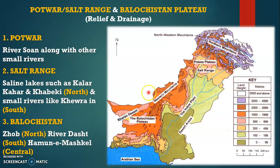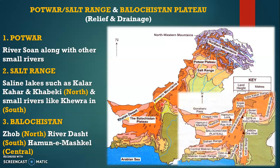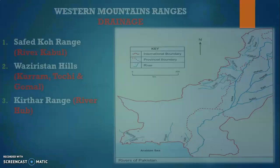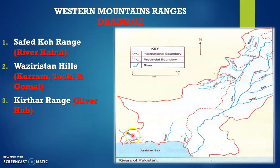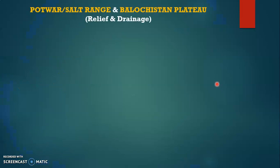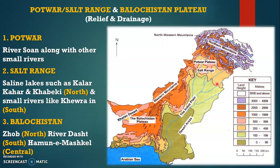When we talk about the Balochistan Plateau, the drainage includes the Zhob River in the north, Dasht in the south, and Hamun-e-Mashkhil, which is a lake in central Balochistan. The exact location of Hamun-e-Mashkhil is shown in an additional picture attached here. The Dasht River falls directly into the Arabian Sea, and the Zhob River is in the northern part. These are basically the drainage features related with the Balochistan Plateau.